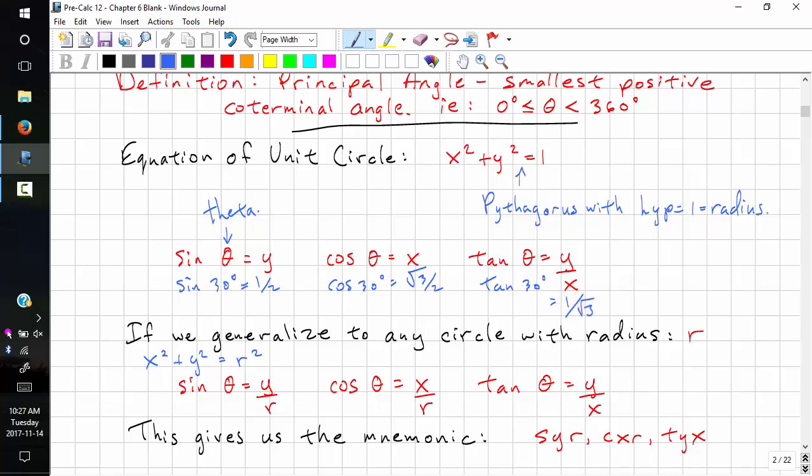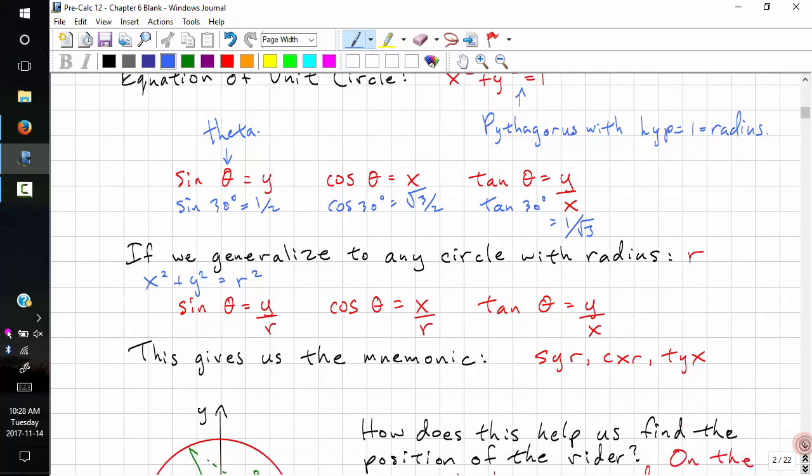For trig, we have a lot of radicals in the denominator, and we don't normally rationalize the denominator.